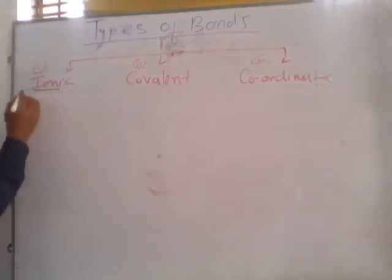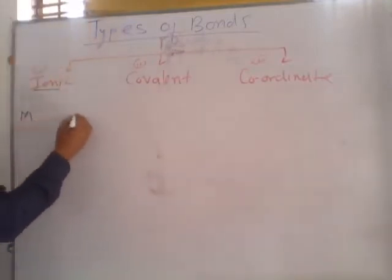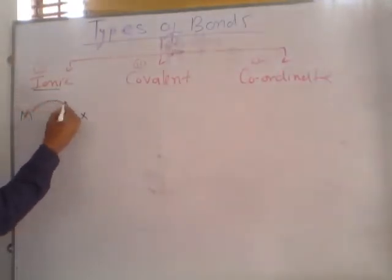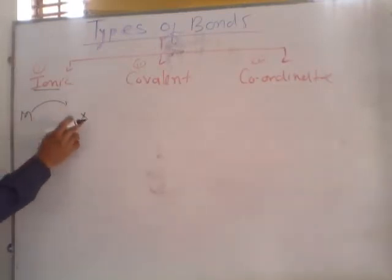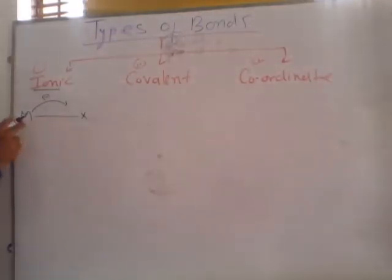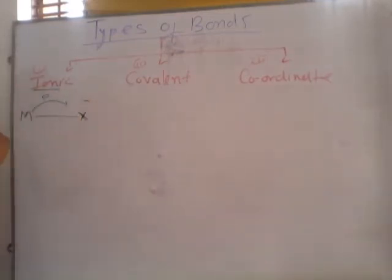In ionic bond, there are ions. When — suppose this is a metal and this is a non-metal — by transferring electrons from metal to non-metal, the bond forms which provides ions. The valence electrons of metals go and are taken by the negative species, which is the non-metal.